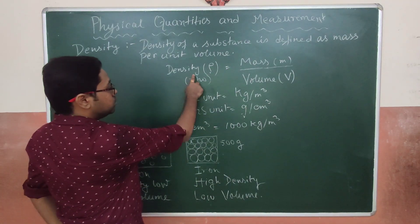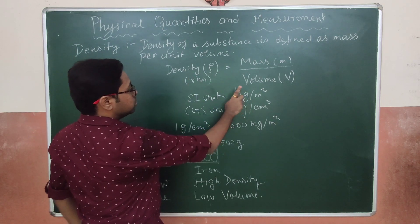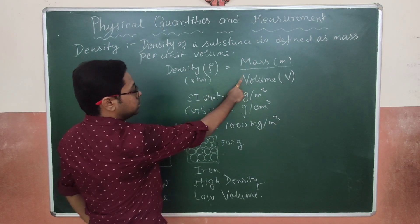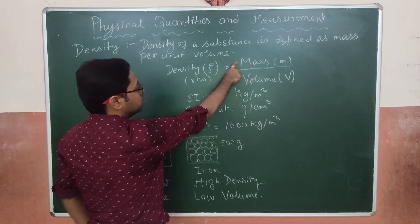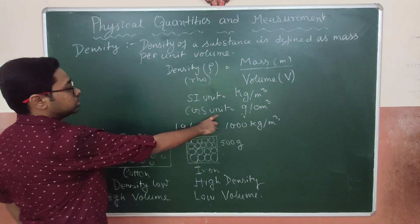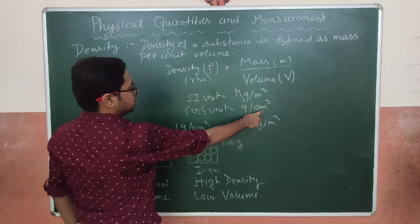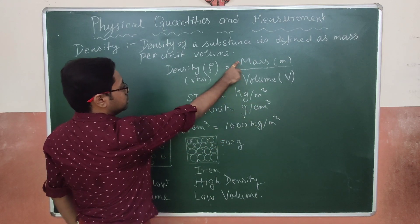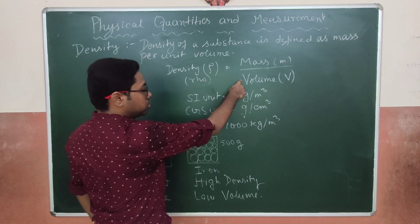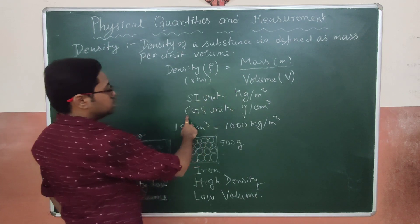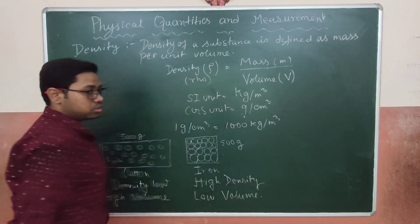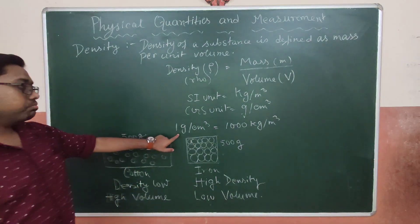The SI unit of density is kg per meter cube, because the SI unit of mass is kg and the SI unit of volume is meter cube. The CGS unit is gram per centimeter cube, since the CGS unit of mass is gram and the CGS unit of volume is centimeter cube. This equation is very important.